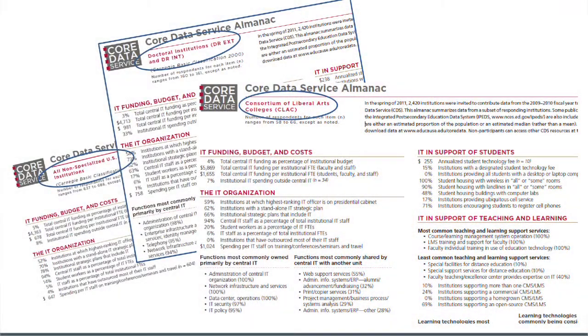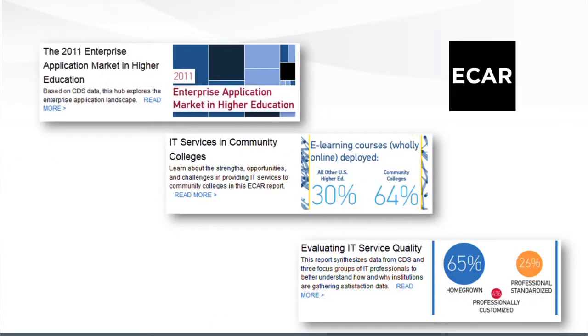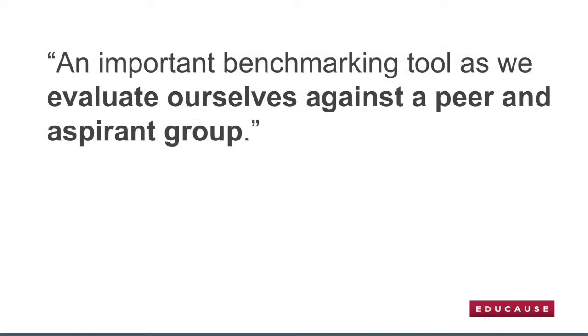CDS data is used to produce reports and publications such as an annual summary report and the popular CDS almanacs. Almanacs summarize and analyze the annual CDS survey data for groups including Carnegie class and consortia such as the Consortium of Liberal Arts Colleges. CDS data is also used for ECAR research, seen most recently in reports on the Enterprise Application Marketplace, IT services in community colleges, and evaluating service quality.